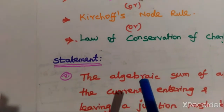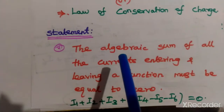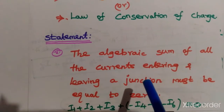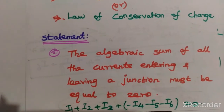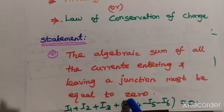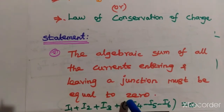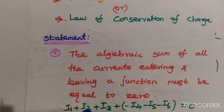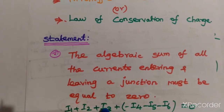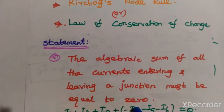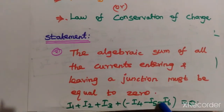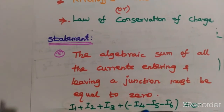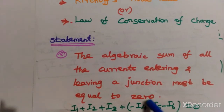The statement of Kirchhoff's current law: the algebraic sum of all currents entering and leaving a junction must be equal to zero. At a node, the sum of currents entering — i1 plus i2 plus i3 — plus the sum of currents leaving — i4, i5, i6 — equals zero.